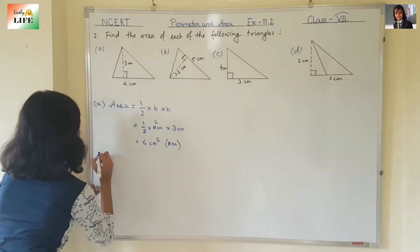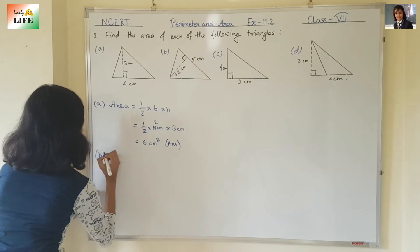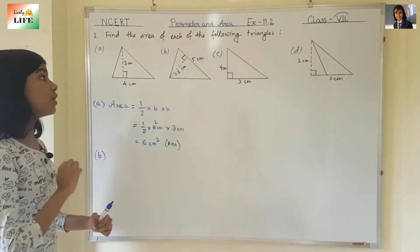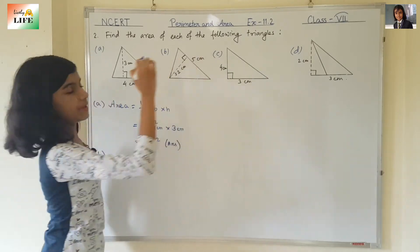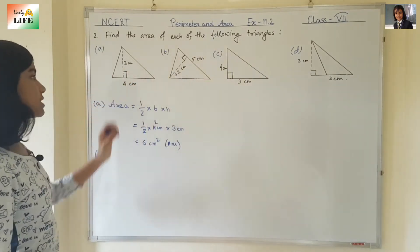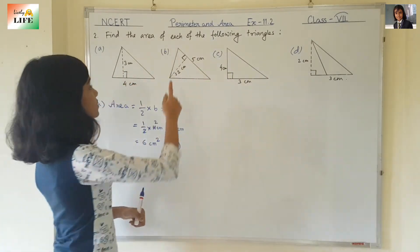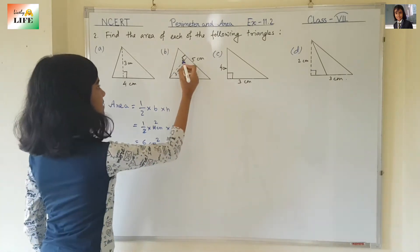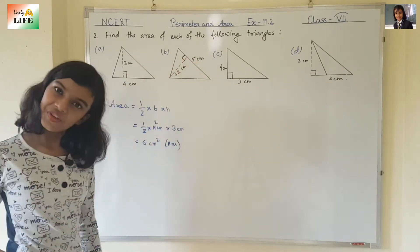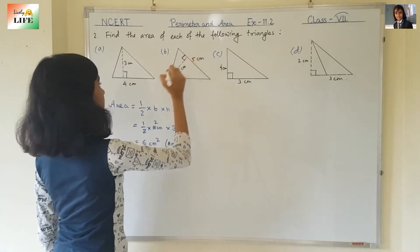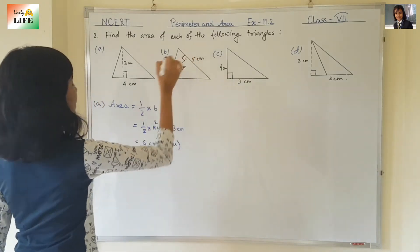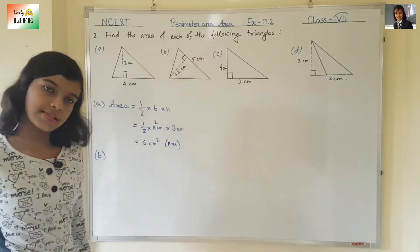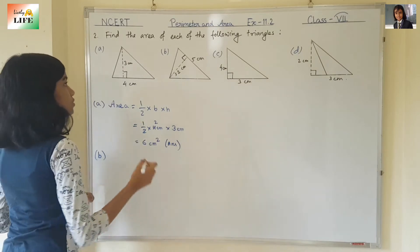Now let's move to the second one, B. Same thing — you can see over here. This is the base now. This is the base and perpendicular to the base is height. You can see this is perpendicular; it is a right angle. So, this is the base and this is the height. Now, for this triangle.